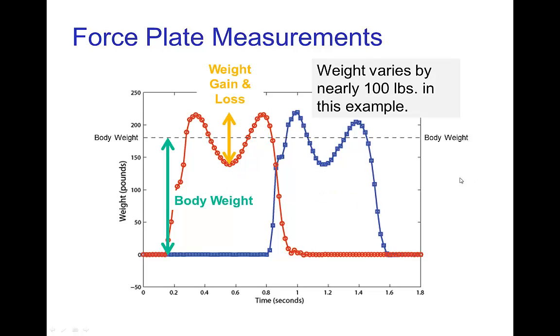The first thing to notice is that the amount of weight gain and loss is rather significant. If this indicates the average body weight, which would be if the person was just standing on the plate without moving, that gain and loss is over a range of nearly a hundred pounds from a peak to this lowest point. It's a very significant amount of weight variation even for a normal walk.